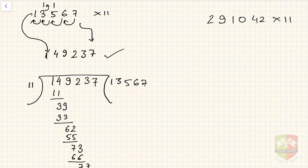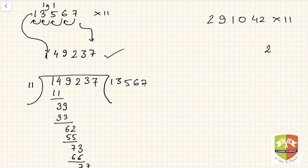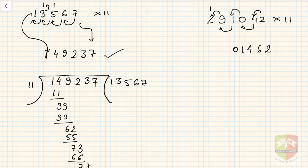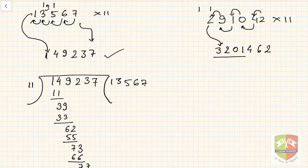Let us take one more interesting problem: 291042 into 11. Start with 2 on the right. Then 2 plus 4 is 6. Then 4 plus 0 is 4. Then 0 plus 1 is 1. Then 1 plus 9 is 10, so write 0 and carry 1. Then 9 plus 2 is 11 plus carry 1 is 12, write 2 and carry 1. Finally 2 plus carry 1 is 3. The answer is 3201462.